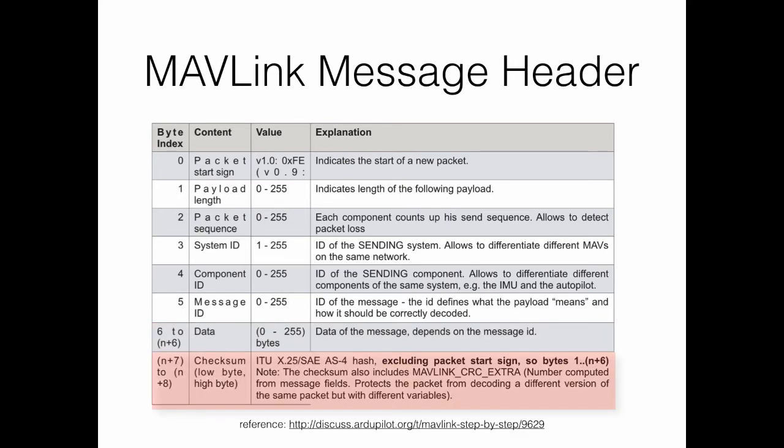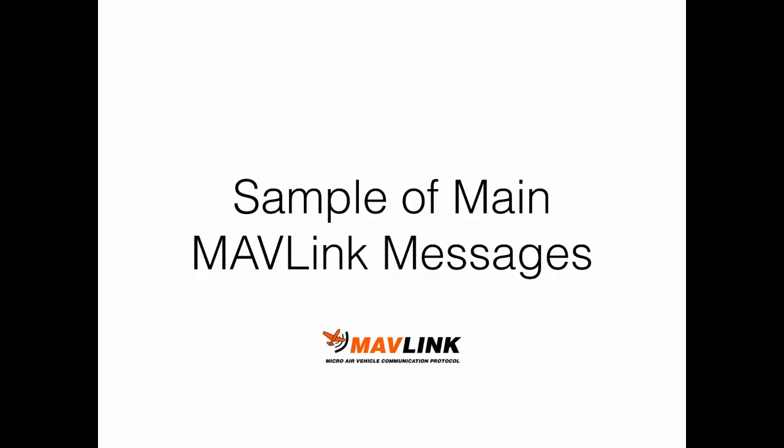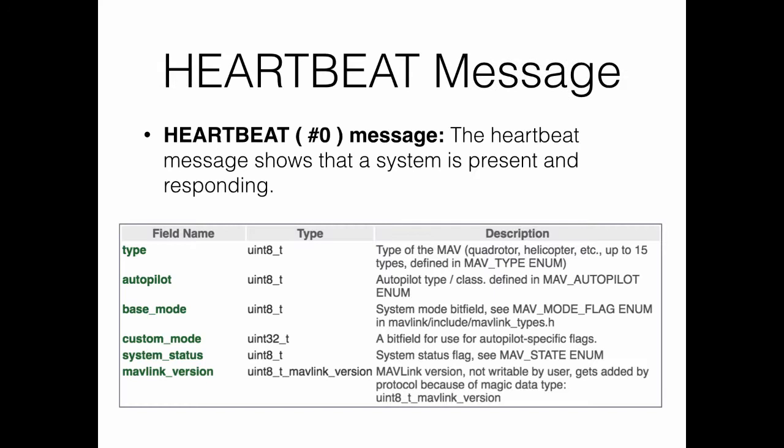The two last bytes represent the checksum. We will now present a sample of the main MAVLink messages. The heartbeat message is the most important message in MAVLink — it indicates the presence of the vehicle system and that it is active. A vehicle should send a heartbeat message periodically, generally every one second, to the ground station to confirm that it is alive. This is a mandatory message so the ground station can verify the drone is active.